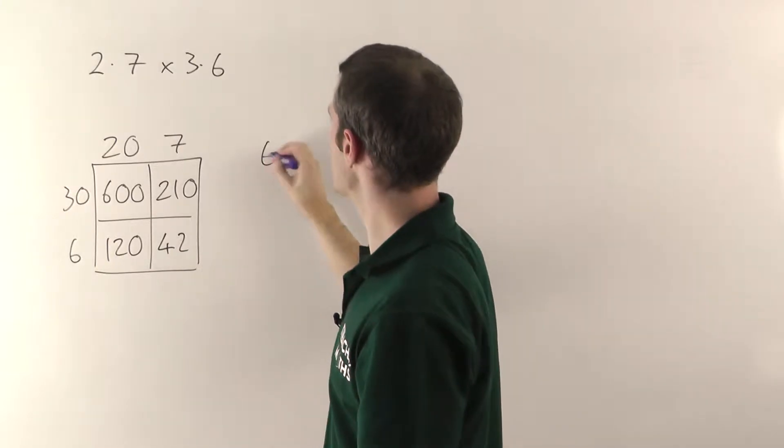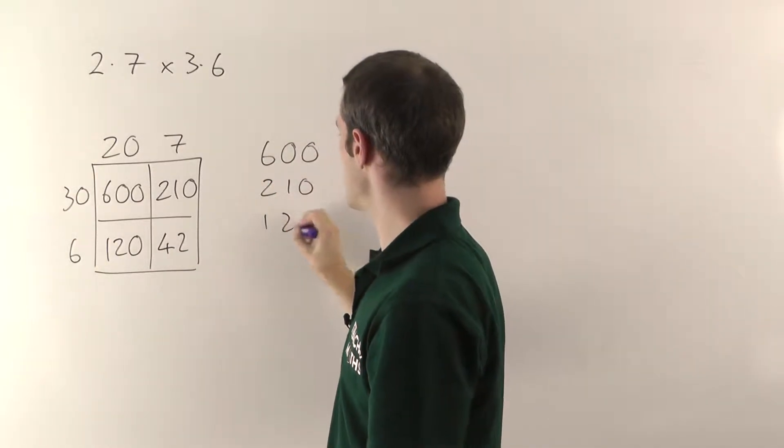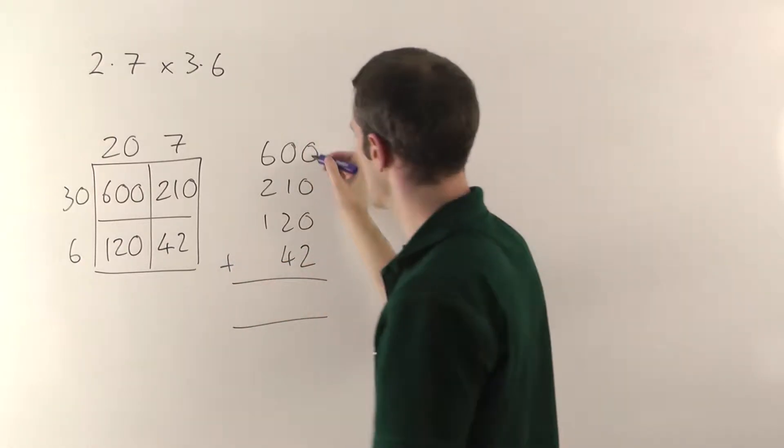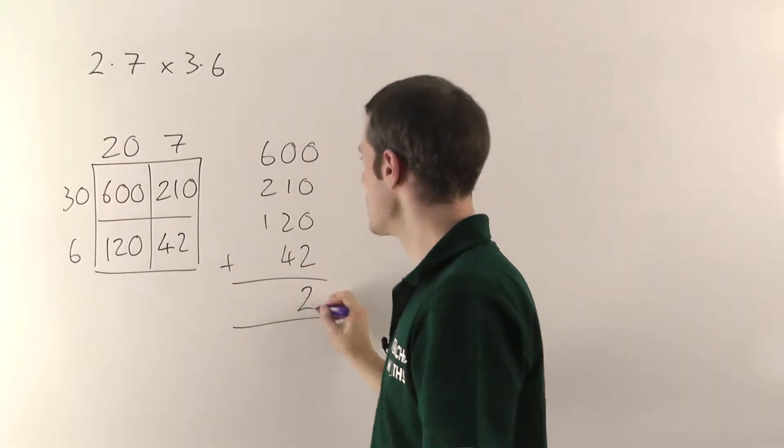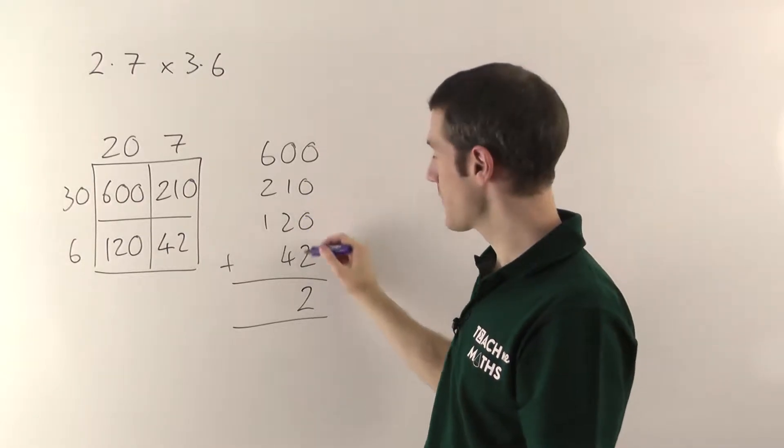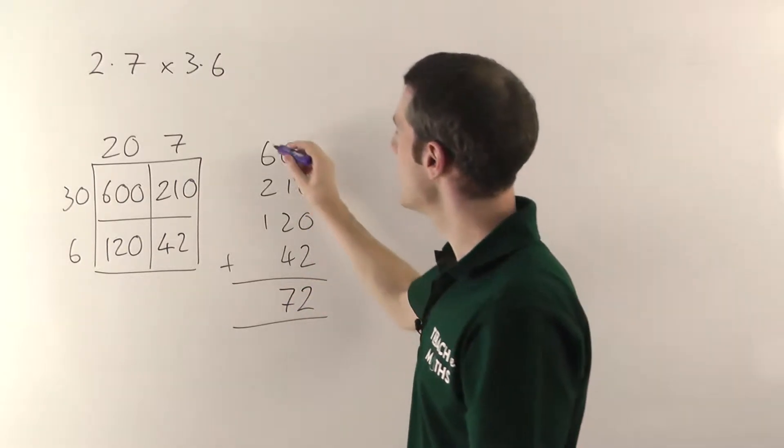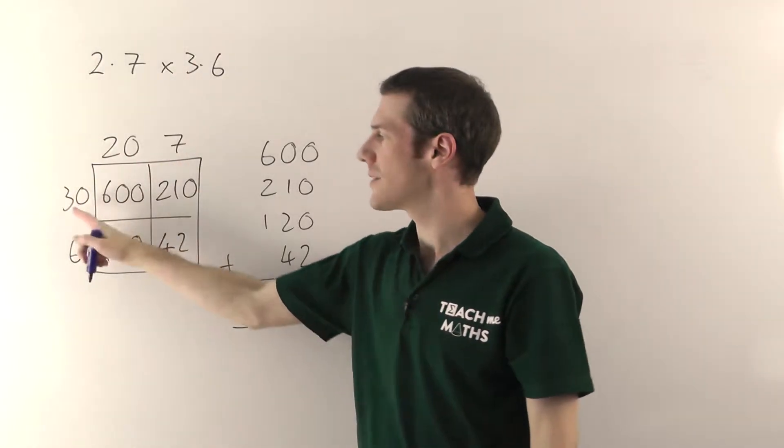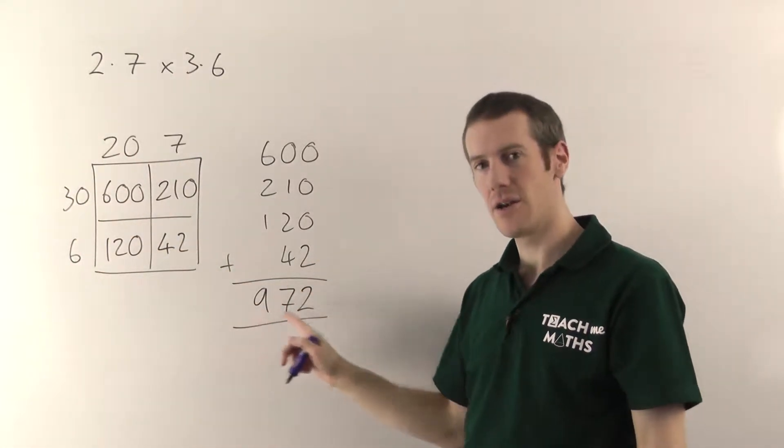Add it all up at the side. 600, 210, 120 and 42. So 0 plus 0, 0 plus 2 is 2. 1 plus 2 is 3, plus 4 gives you 7. And 6 plus 2 is 8, plus 1 gives you 9. So 27 times 36 will give you 972.